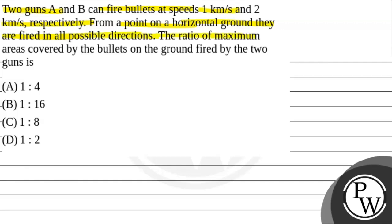They are fired in all directions. The ratio of maximum areas covered by the bullets on the ground fired by the two guns is... The velocity is given by 1 km per second and the other is equal to 2 km per second.